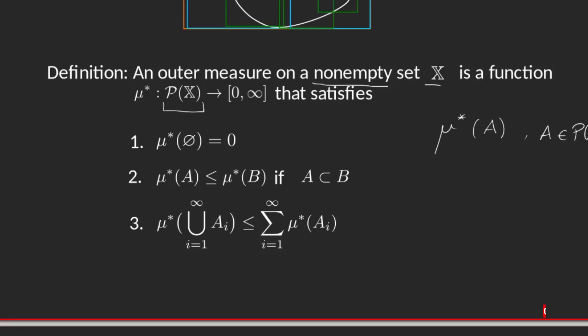The first property is just the same we had for measures. The second property is monotonicity. And this was actually something that measures had, but it wasn't required in the definition. It was just a consequence of additivity. So now we have to ask for monotonicity because we don't have additivity. We have sub-additivity. Sub-additivity was also one of the properties that measure satisfied. But the difference now is that we are asking for monotonicity in point number two and for sub-additivity in number three as a property in the definition.